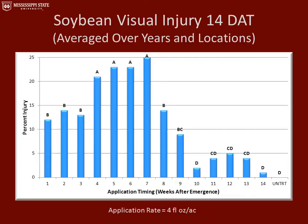This graph represents soybean visual injury 14 days after the treatments were made, averaged over all years and locations. On the y-axis we have percent injury, and on the x-axis we have application timing. We saw the greatest amount of visual injury at weeks four, five, six, and seven, ranging from 21% to 25% visual injury. After the nine-week application was made, we saw no significant visual injury.